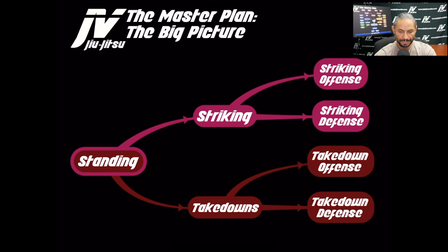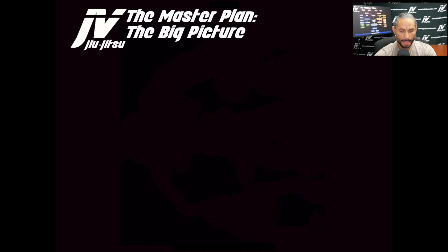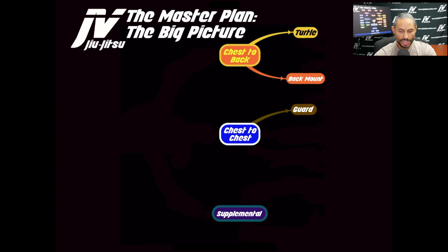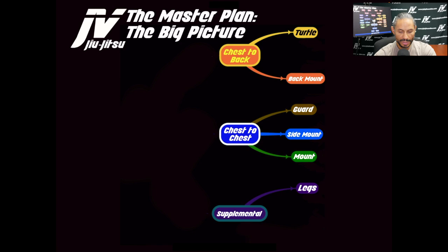There are three categories of Core Ground Positions: Chest-to-Back, Chest-to-Chest, and Supplemental. Chest-to-Back includes the Turtle and the Back Mount. Chest-to-Chest includes the Guard, the Side Mount, and the Mount. Supplemental includes Leg Locks and AFC, which I call Arm Lock Final Control.